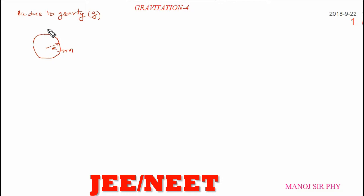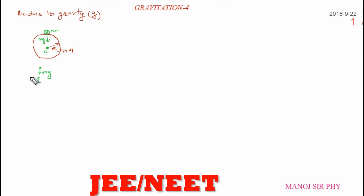Another object of mass small m is lying over the surface. The weight of this object acts in the downward direction and the center is O. Taking two point masses, the force acting downward is mg. The force of gravitation acting between them is fg.